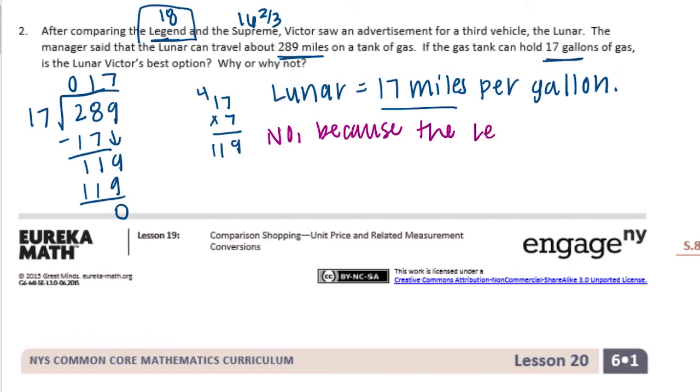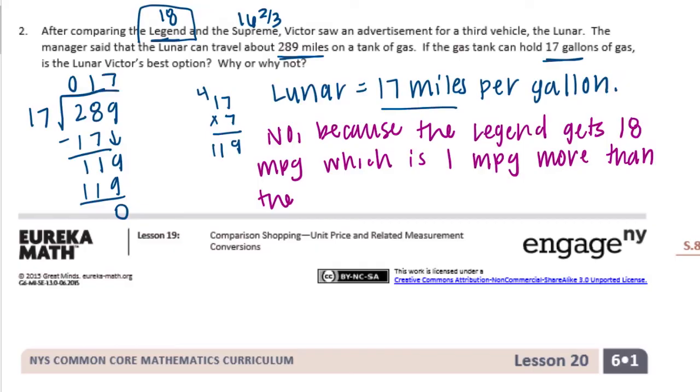The Legend gets 18 miles per gallon, which is one mile per gallon more than the Lunar. So I'm going to say that the Lunar...